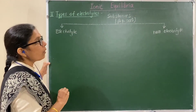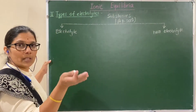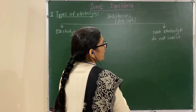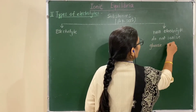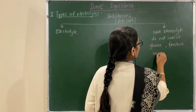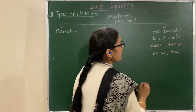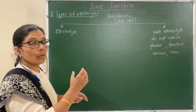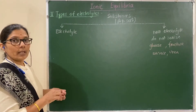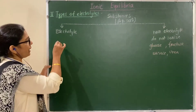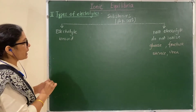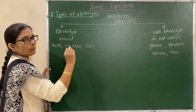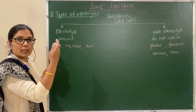Non-electrolytes are substances that when dissolved in water do not ionize. Examples are glucose, fructose, sucrose, urea, glycerine, etc. When dissolved in water, they remain in the molecular state and do not produce ions. Electrolytes are substances that when dissolved in water give ions — they ionize. Examples include NaOH, acetic acid, HCl, NaCl, etc.